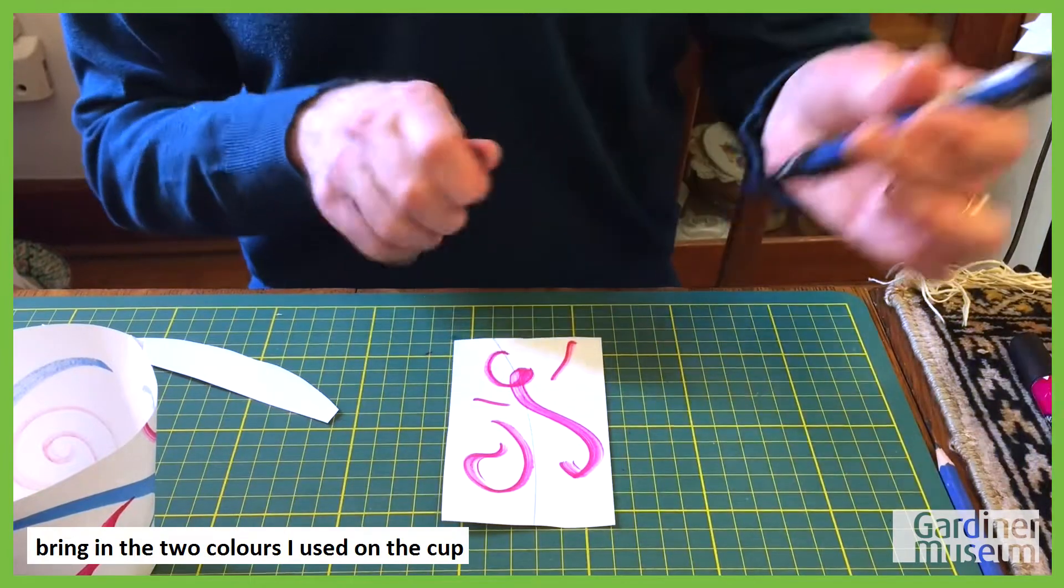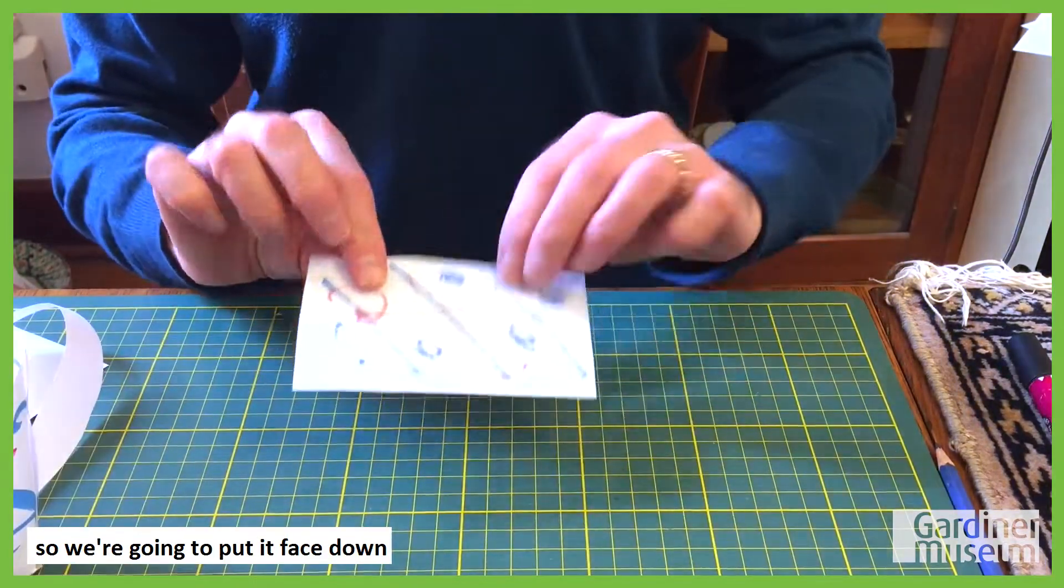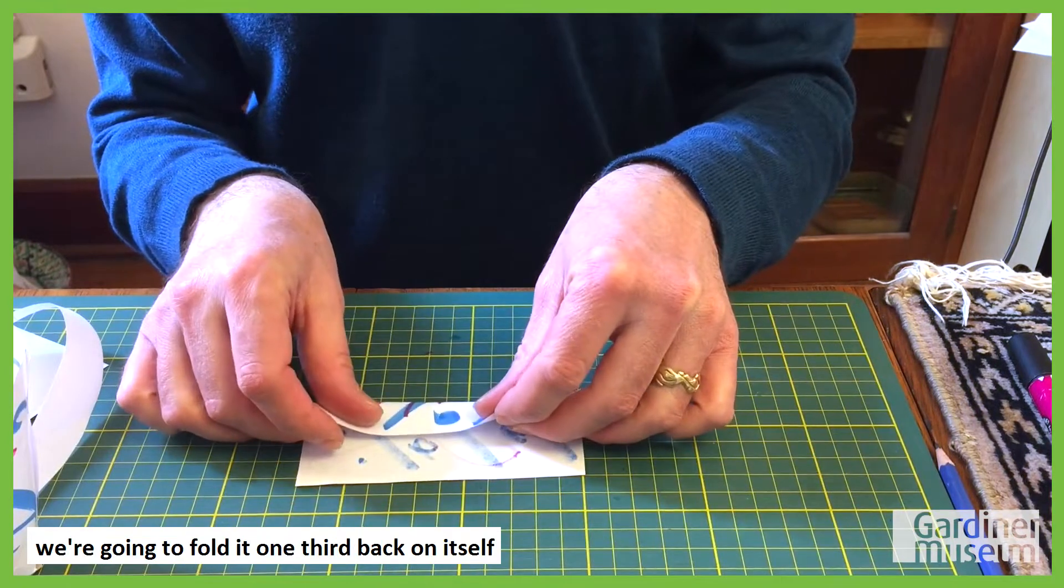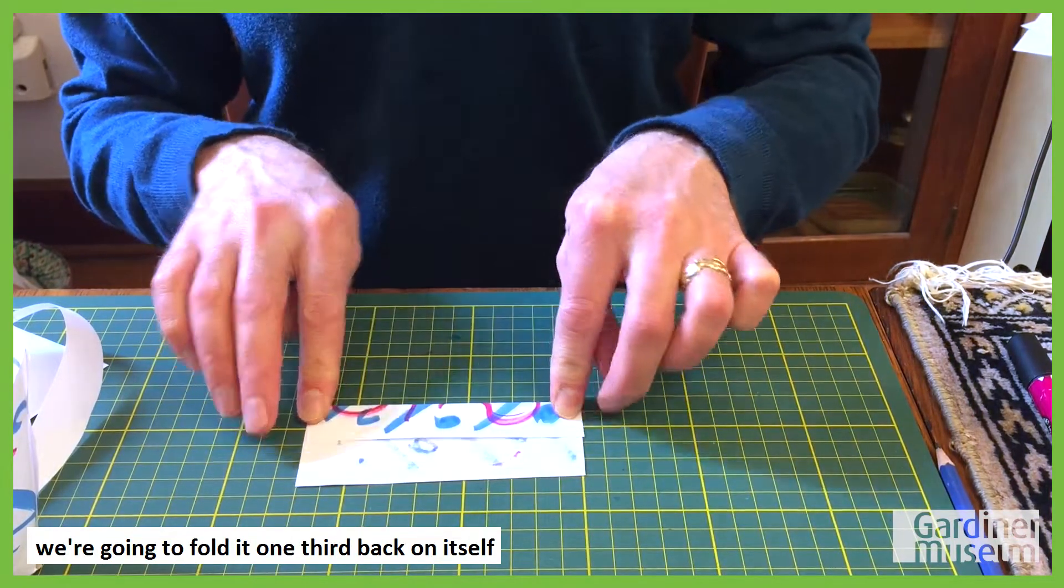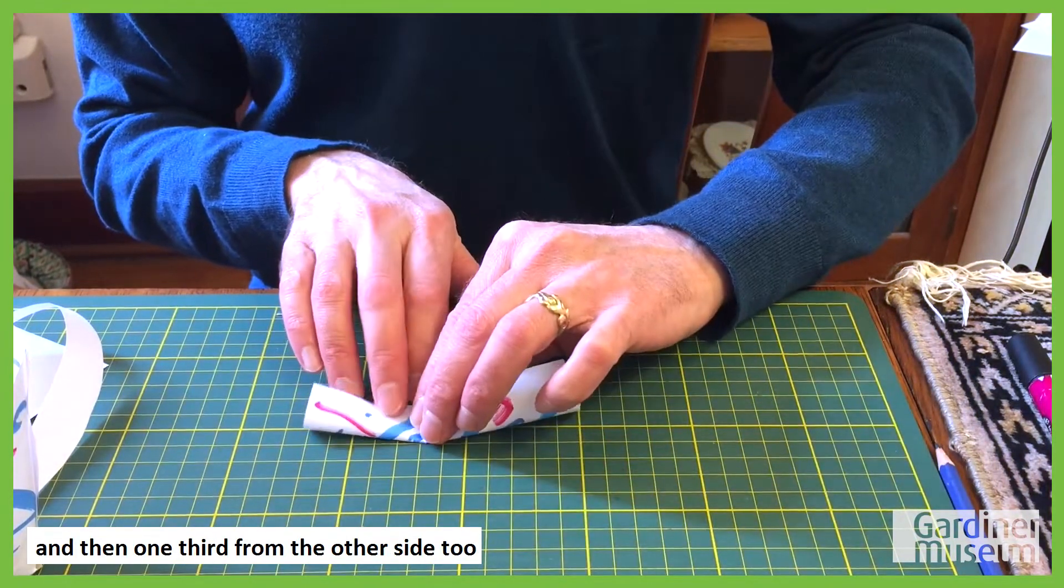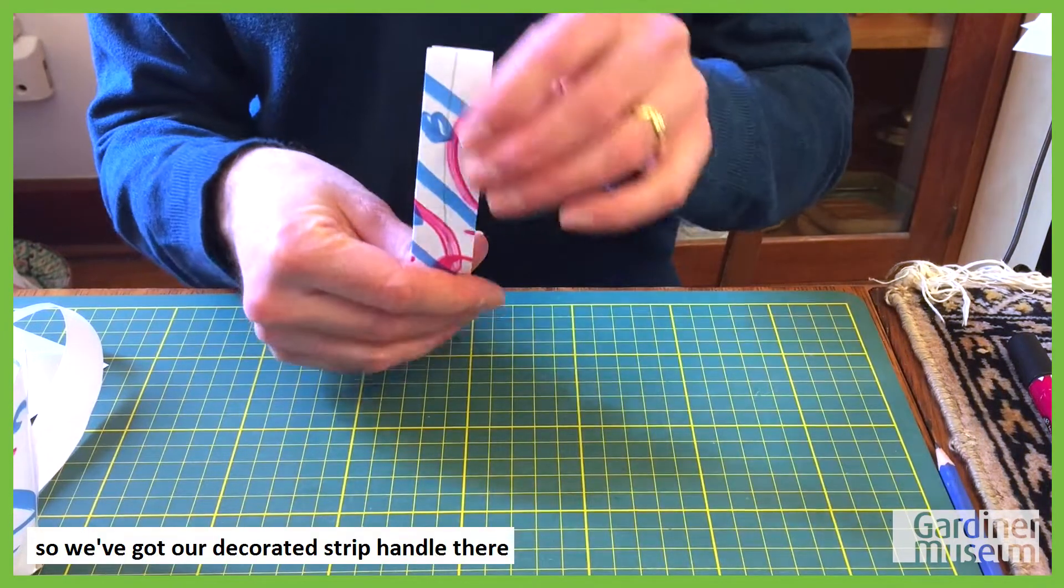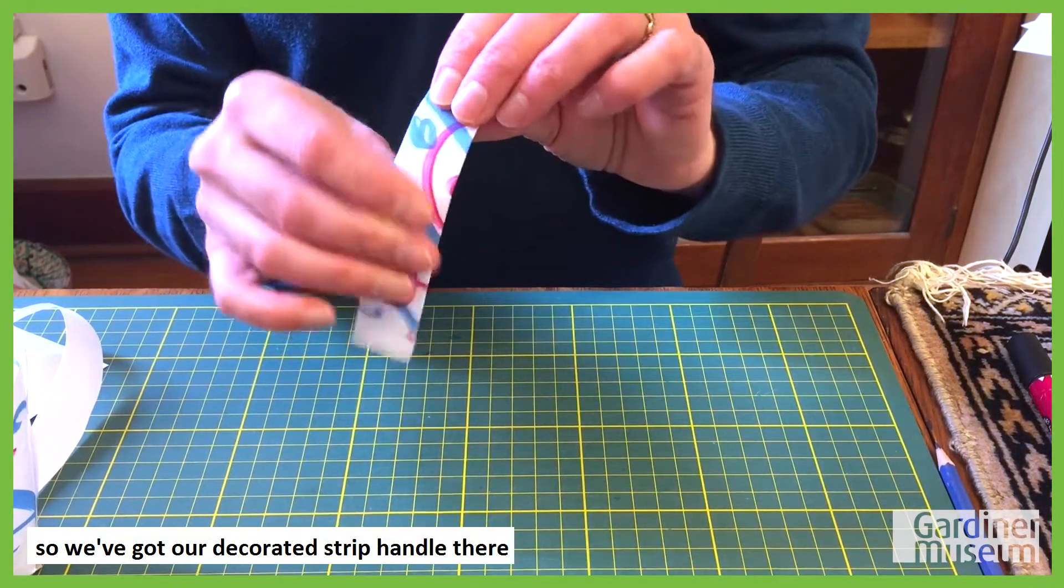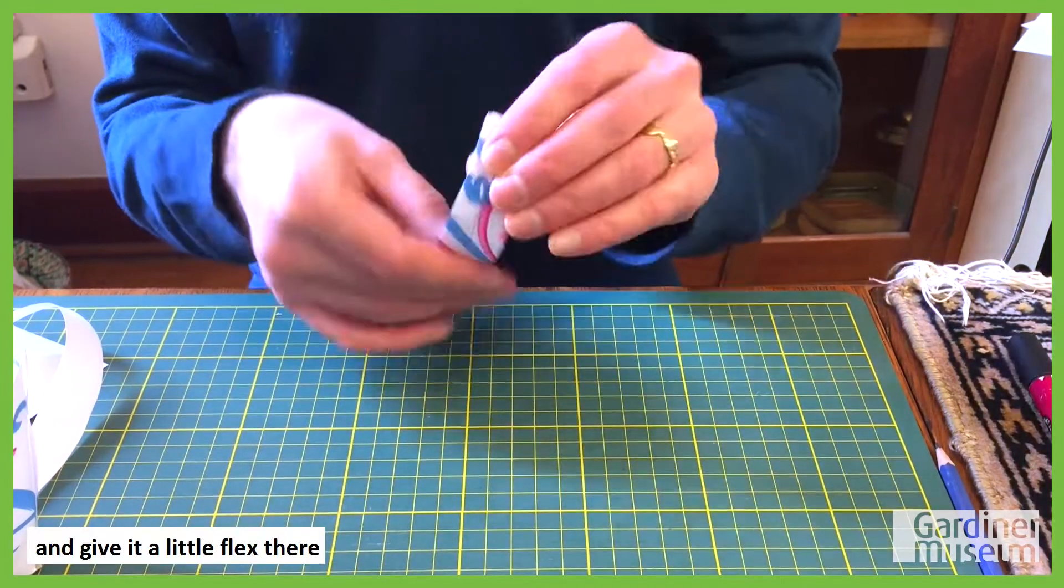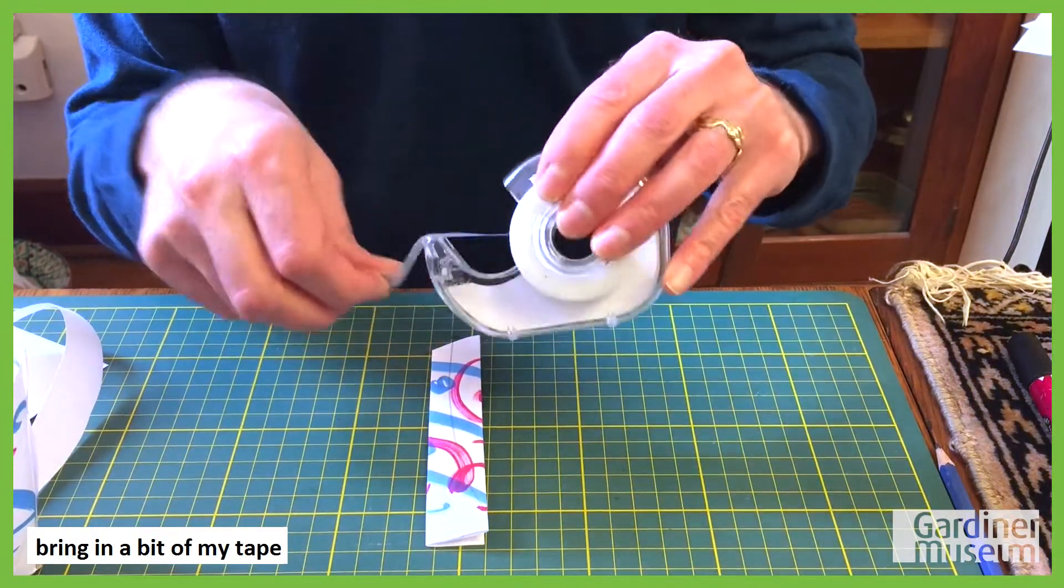So we're going to put it one third back on itself, and then one third from the other side too. Tuck it there. So we've got our decorated stripe strip handle there. And give it a little flex there. Bring in a bit of my tape. So I'm going to tape it from the underside.